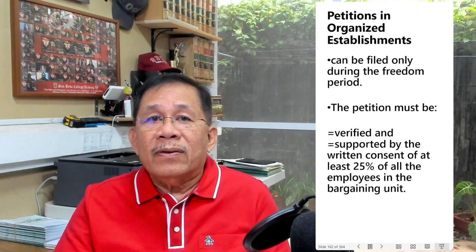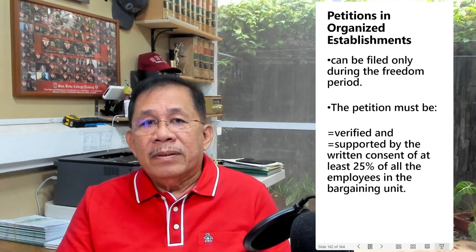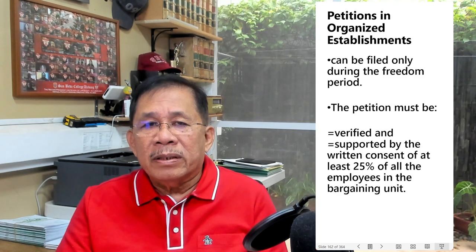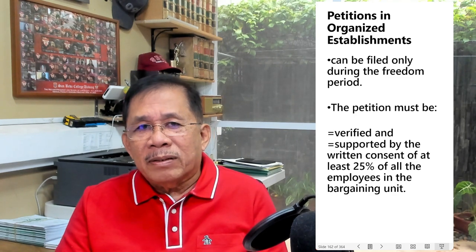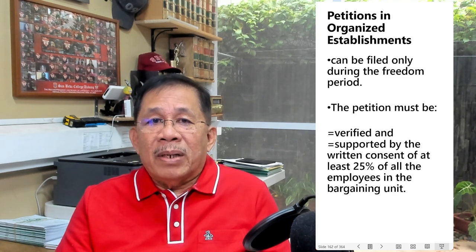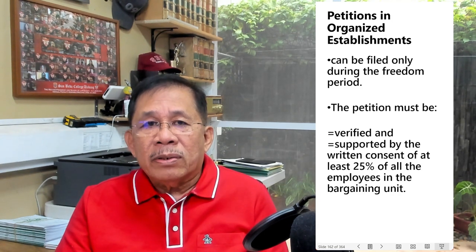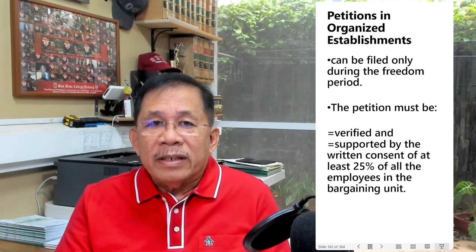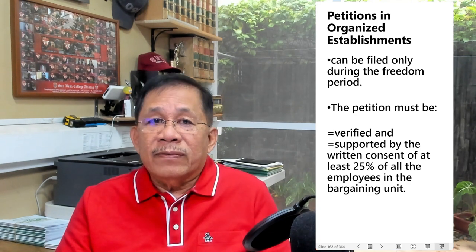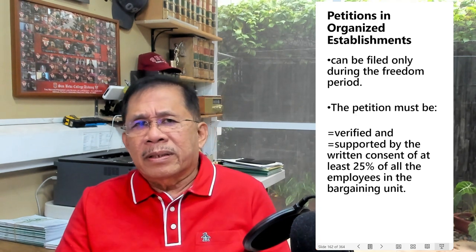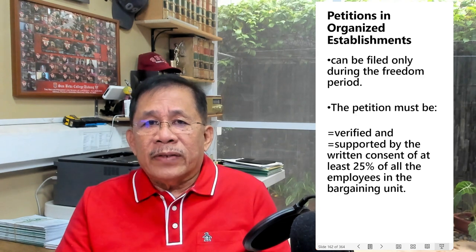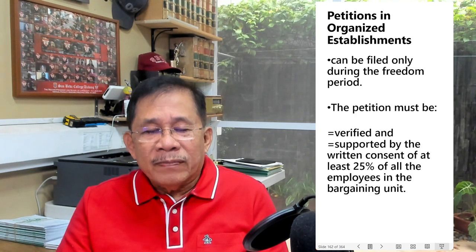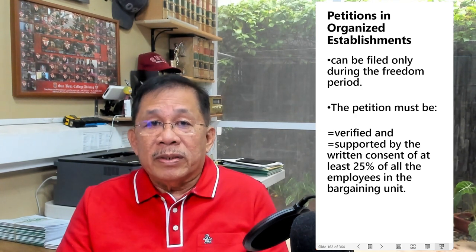The significance of the 25% consent: if the petition is supported by the written consent of 25% of the employees within the bargaining unit, it is mandatory on the part of the med-arbiter to order an election. But if the written consent falls short of the 25% statutory requirement, it is discretionary on the part of the med-arbiter to call for a certification election — meaning the med-arbiter may or may not order one. But if the petition is totally unsupported by the 25% written consent, the petition should be dismissed.